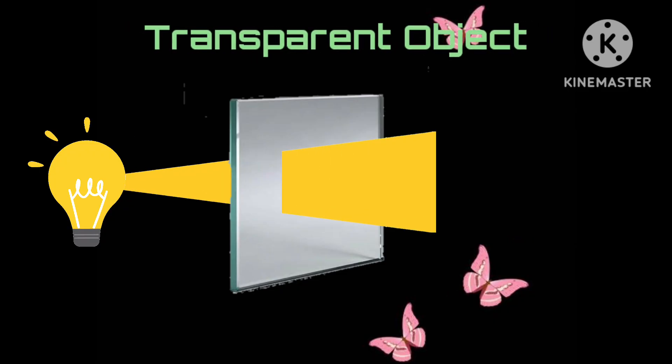First one is transparent object. An object through which light is completely passed is known as a transparent object. We can clearly see through this object.